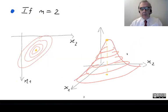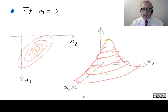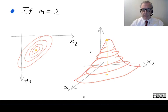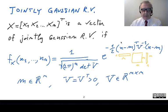If n equals 2, we can visualize the probability density function because it is a function of two variables x1 and x2, and therefore it is a surface. Just as in the one-dimensional case the Gaussian PDF had the shape of a bell, in this case we have a 3D bell shape for the surface of the PDF. We can also look at the level lines, and these level lines depend only on the quadratic form, and therefore they are ellipses.